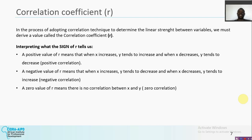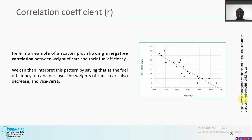A negative value of r means that when x increases, y tends to decrease, and when x decreases, y tends to increase. So with a negative correlation between a father and son: as the number of cars the father has increases, the son's decreases, and vice versa. A zero value of r means there is no correlation between x and y — there is no interpretation for zero correlation; it means there is no linear relationship and we cannot measure the degree of linear relationship between the two variables.